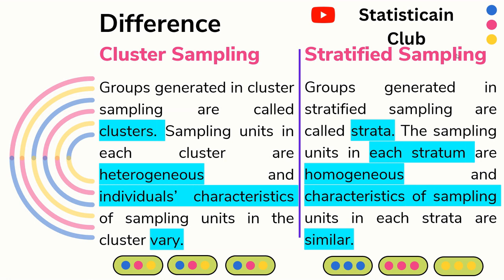On the other hand, in stratified random sampling, groups generated are called strata. This is the first strata, this is the second strata, and this is the third strata. The sampling units in each stratum are homogeneous. As you can see, the first strata has blue balls, the second strata has pink balls, and the third strata has yellow balls. The characteristics of sampling units are similar within each stratum.